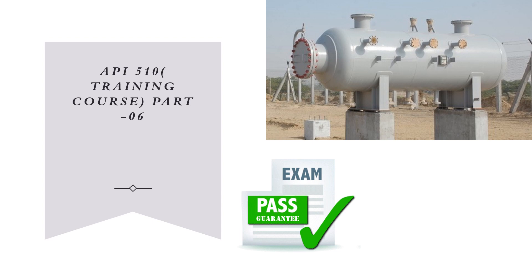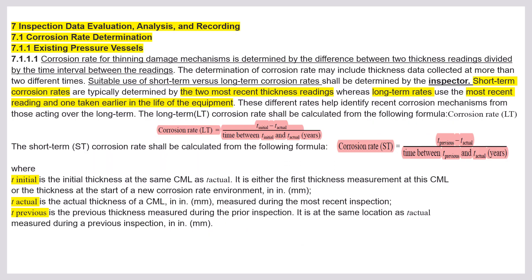What is inspection data evaluation? The corrosion rate of a thinning damage mechanism is determined by the difference between two thickness readings divided by the time interval between the readings. I will make it simple: when you put a pressure vessel in service, you find the initial metal thickness of the steel plate.